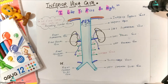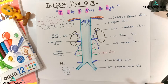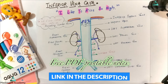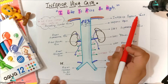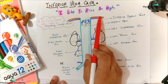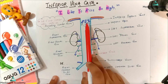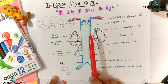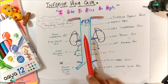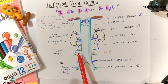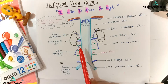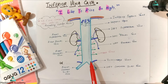The inferior vena cava is easy to understand if you know the abdominal aorta — the branches of the abdominal aorta and the tributaries of the inferior vena cava are more or less the same with slight differences. The tributaries of the inferior vena cava include: the right and left inferior phrenic veins below the diaphragm, the hepatic veins, the right suprarenal vein, the right renal vein, the right gonadal vein, and four pairs of lumbar veins.